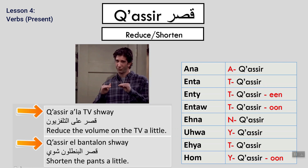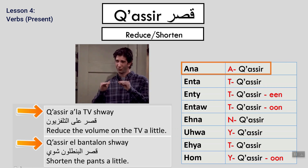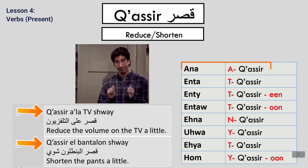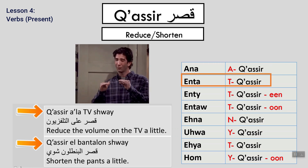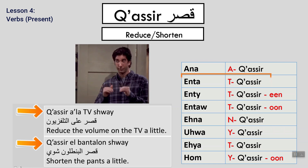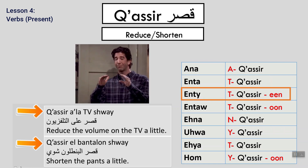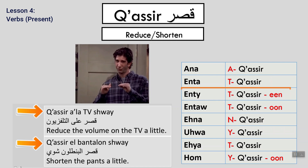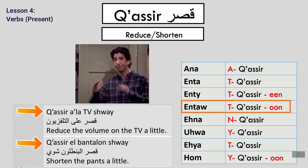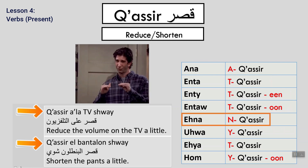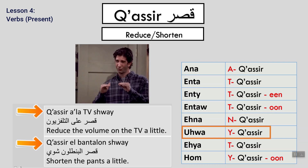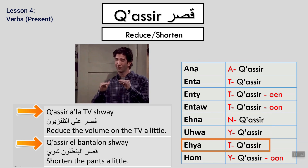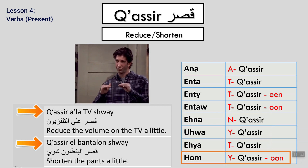So, qassr — qassr means 'reduce' or 'shorten'. Ana agassr. Enta tagassr. Entay tagassrin — notice we put T and ein at the end. Entau tagassrun. Ahna nagassr. Uhua yagassr. Ihya tagassr. Hum yagassrun.